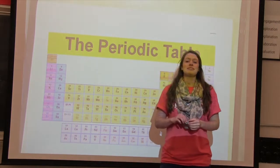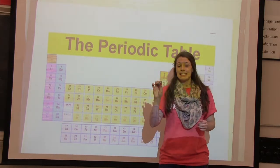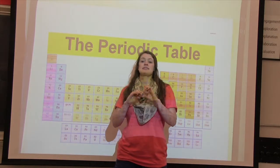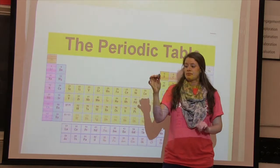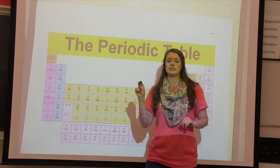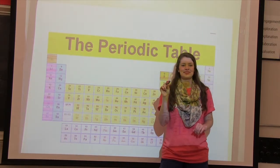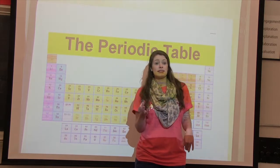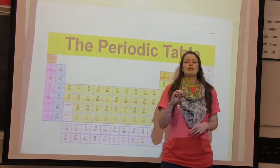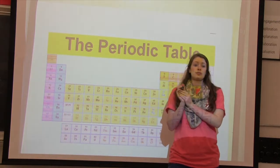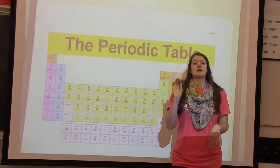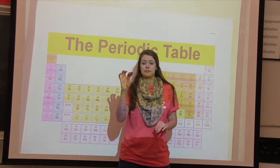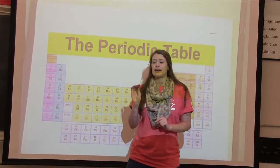You guys are going to be working in groups. Take out the mineral labeled number 6 and we're going to figure out what this common mineral is. The first test that scientists use is color. Raise your hand if you want to give me an idea of what color this mineral is. Gray. So to go along with color, scientists use the word transparent — that means you're able to see through it. If it's opaque, it means you cannot see through. For this one, is it transparent or opaque? Opaque. So write that down on your worksheet.